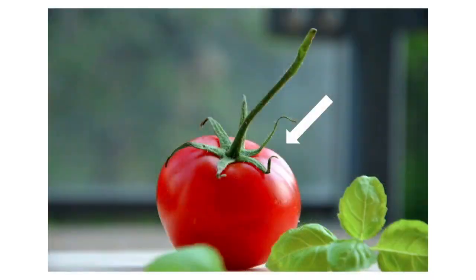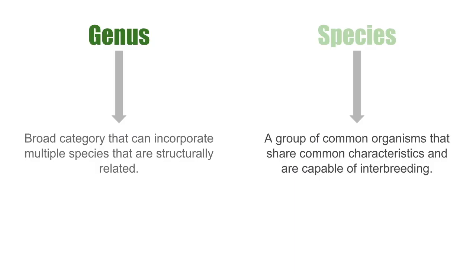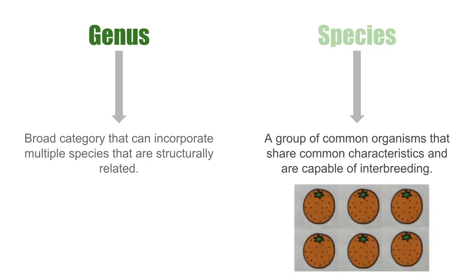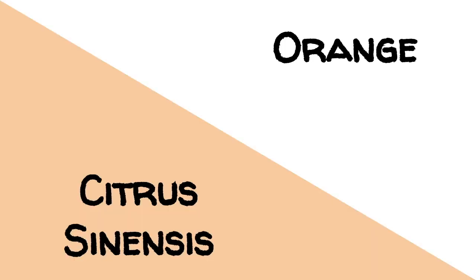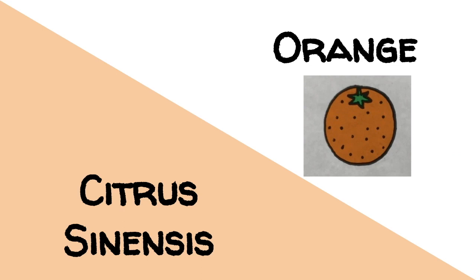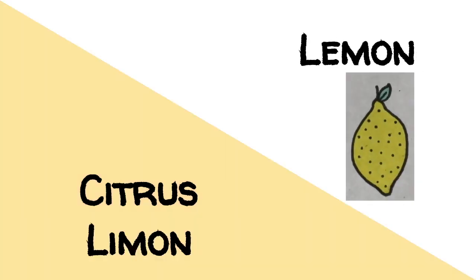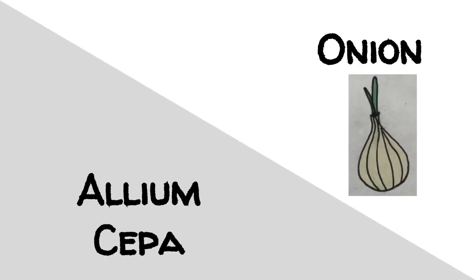You most likely know the common name of your plant — the common name is what you might call your plant when talking with friends. It may surprise you that scientific names are very different. Scientific names follow a specific set of rules using a two-name system that describes the genus and species of an organism. A species is a group of organisms that share common characteristics and are capable of interbreeding, while the genus is a broader category that can incorporate multiple structurally related species. For example, the common name orange has the scientific name Citrus sinensis, the common name lemon has the scientific name Citrus limon, and the common name onion has the scientific name Allium cepa.